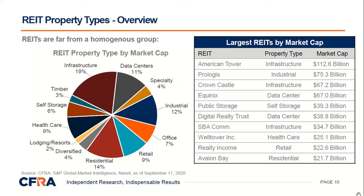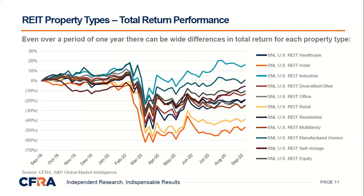This slide showing total return performance over the last year for REIT property types is really important. All property types start at zero and fan out — and this is not just a product of COVID-19. Every year there's a spread of 50% to 60% between the top performers like industrial and the underperformers like hotel and retail, which are down 50% or 40%. This creates a huge opportunity for alpha: investors who correctly assess the fundamentals of a REIT property type can achieve very high outperformance relative to treating the REIT sector as a homogenous group.